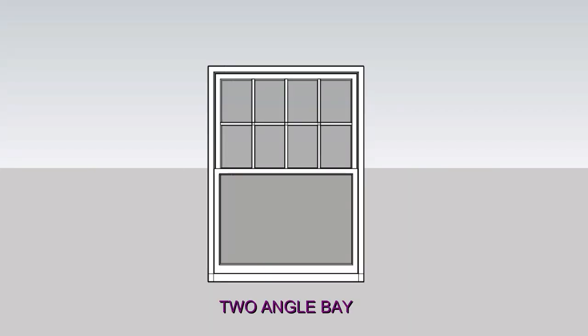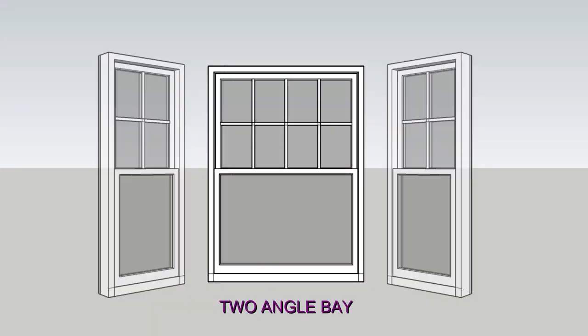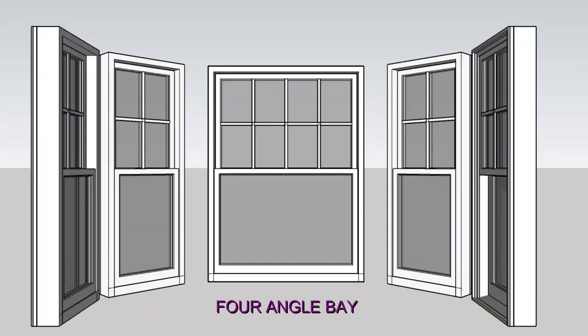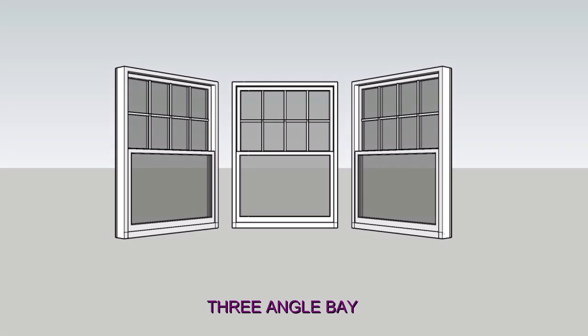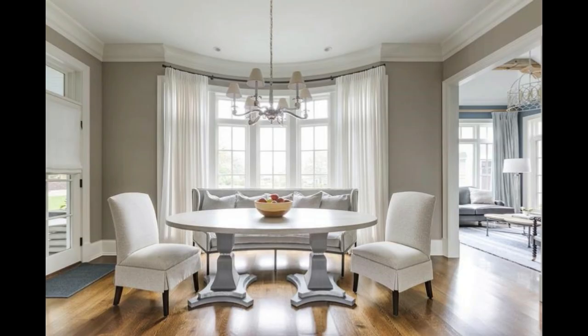Bay windows come in different configurations. A two-angle bay has one large central panel and two smaller side panels. A four-angle bay has a large panel with two or more angled panels on each side. A three-angle bay has three or more windows of the same size. If the angles between the windows on a bay window are very subtle, then it may be treated as a bow window.